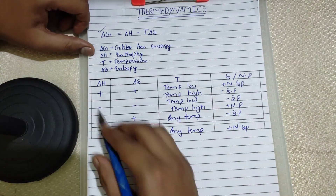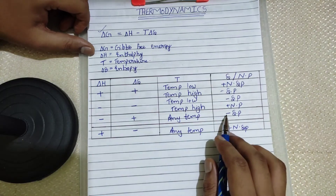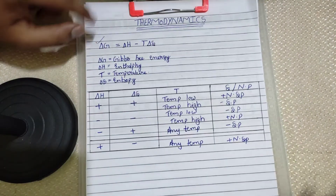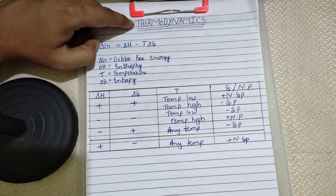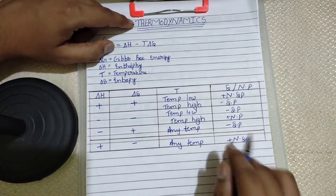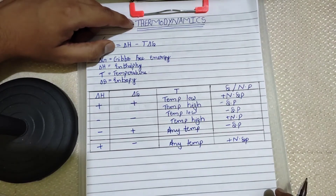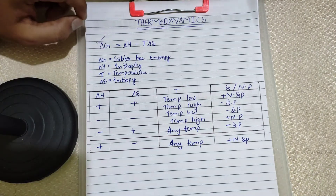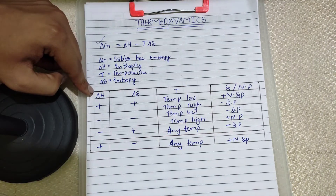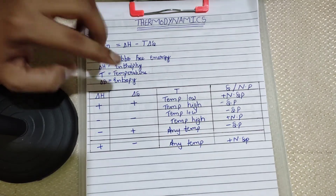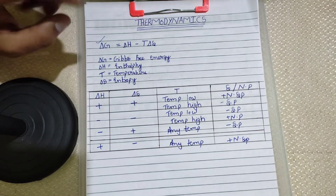If you just remember this one table, then any question asked from this topic in thermodynamics you can easily crack. Four marks are in your pocket — you can grab them and no one can take them. Learn this table, keep it in your mind, and you will never lose marks from this topic.